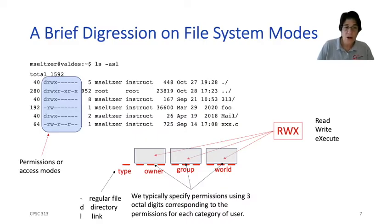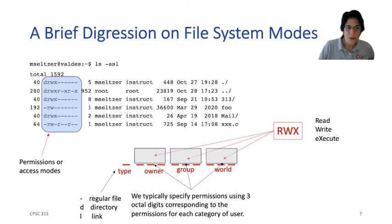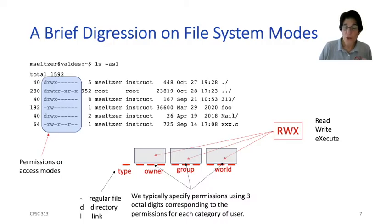Sometimes you might see L for a symbolic link. The type tells you what kind of object it is. The rest of the characters are broken into three sets of three bits: they correspond to the owner of the file — the person who created it — the group to which that user belongs, and the rest of the world, meaning everybody else.